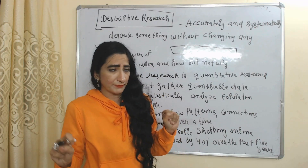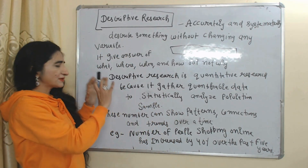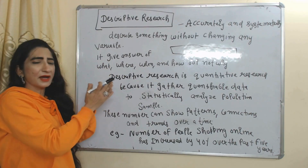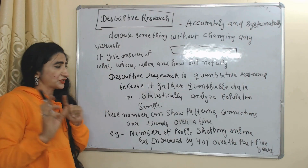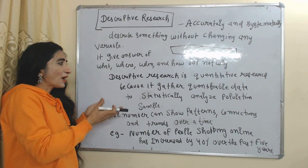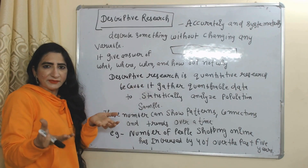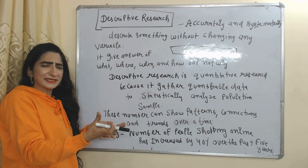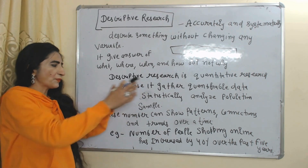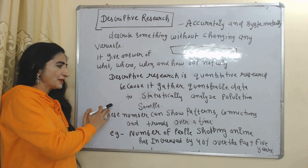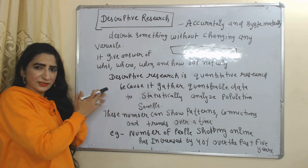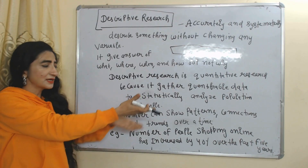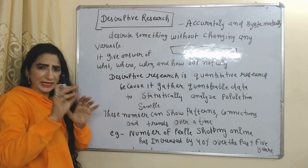That's why descriptive research gives answers to what, where, when, and how questions — but not the why question. Descriptive research is quantitative because it gathers quantifiable data by strategically analyzing population samples and numbers, which can show patterns, connections, and trends over time.